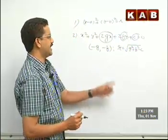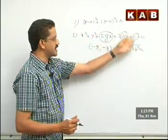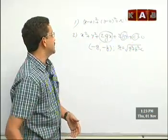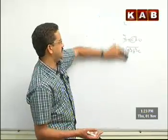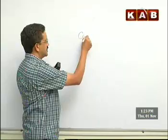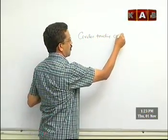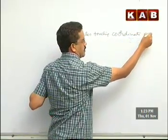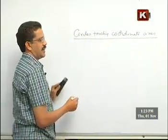Any time, directly or indirectly, they give you three conditions and ask you to find the equation of the circle. Before that, let us see the circles touching coordinate axes — that is what we are about to begin. So let me start with that. The heading is: circles touching coordinate axes.